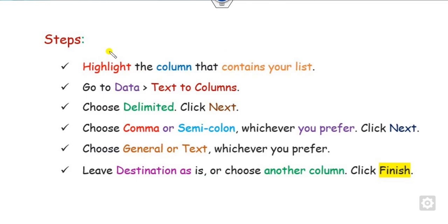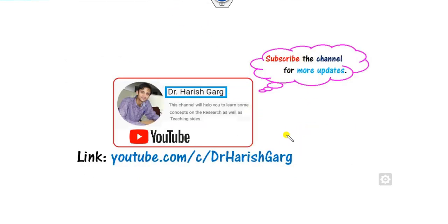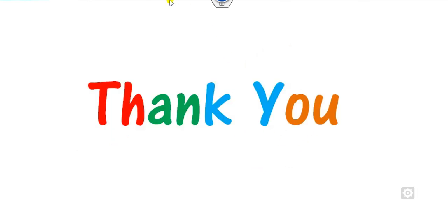To summarize: highlight the column, go to Data, click on Text to Columns, choose Delimited, select your delimiter (semicolon or comma), set the output destination, and click Finish. I hope you learned from this lecture. You can follow the link for more updated videos. Best of luck students, happy learning!